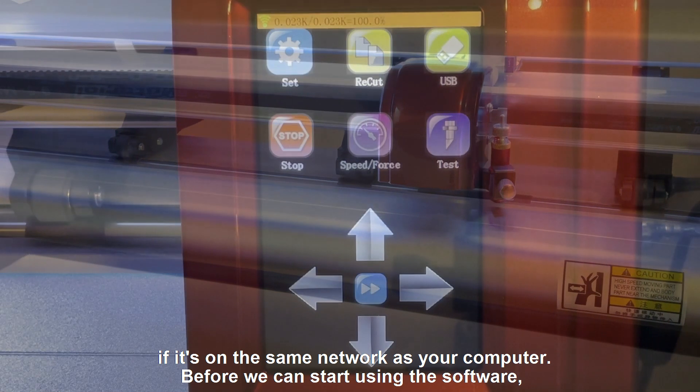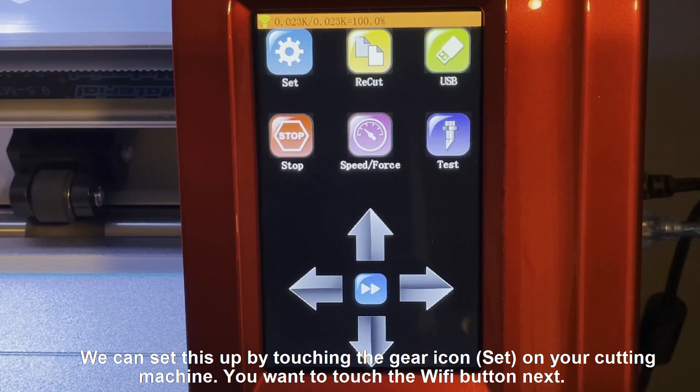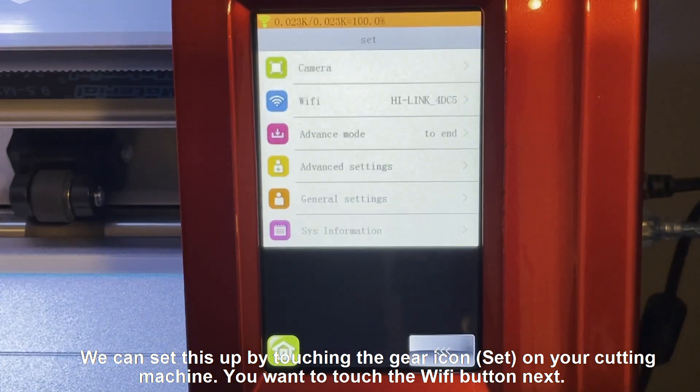Before we can start using the software, we want to make sure that your cutting machine is on the same network as your computer. We can set this up by touching the gear icon on your cutting machine. You'll want to touch the Wi-Fi button next.